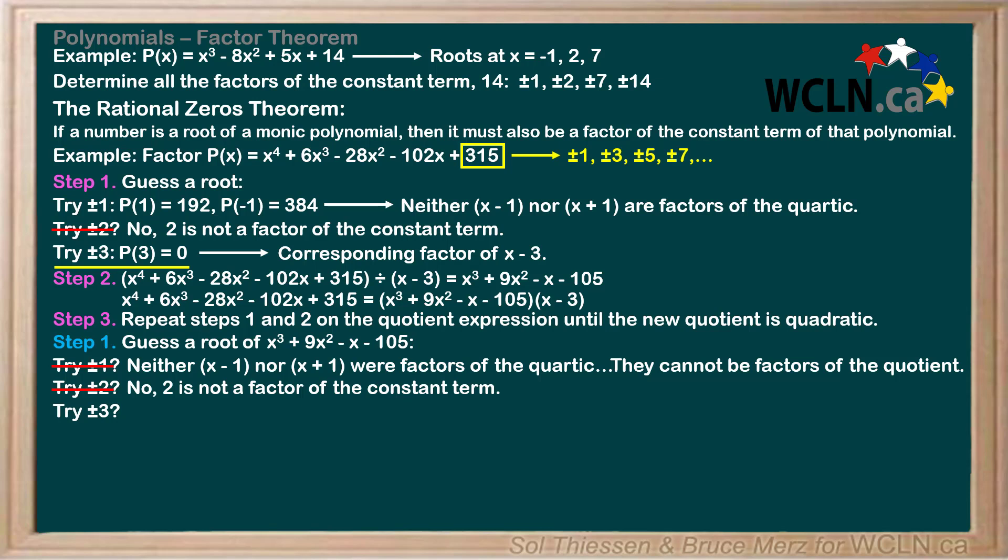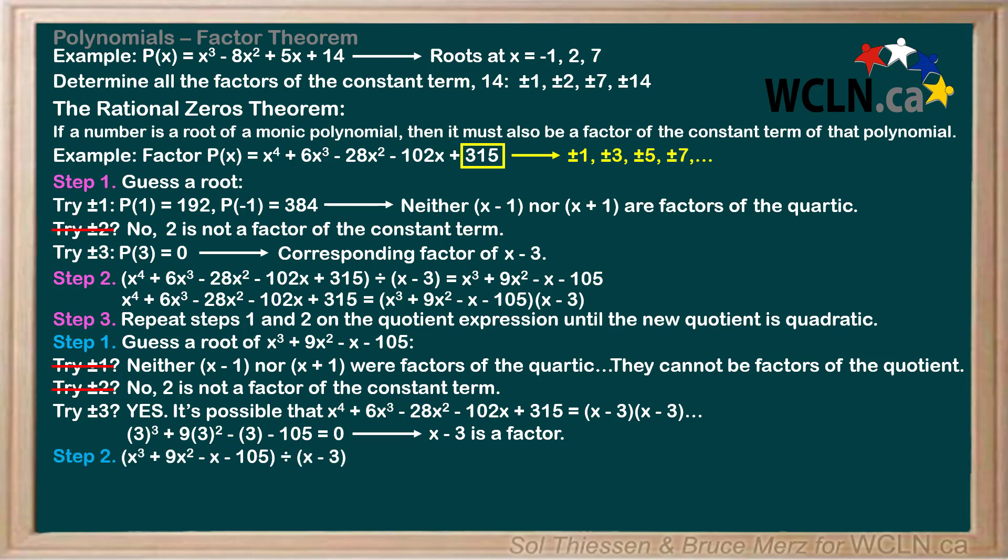This is an important point. Yes, we should try positive 3. It's possible that the original quartic has a factor of x minus 3 squared, meaning that x minus 3 could be a factor of the quotient cubic. So trying 3 in our quotient cubic, we actually do get 0, meaning that x minus 3 is a factor of the quotient cubic and it will appear as a factor twice in our factorization of the original quartic. On to step 2, we'll divide the cubic by the factor we just found, x minus 3.